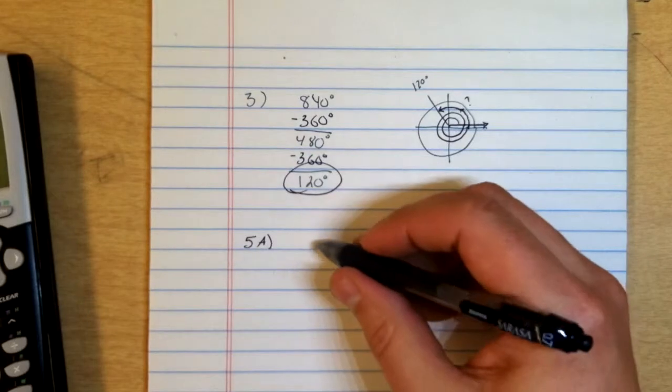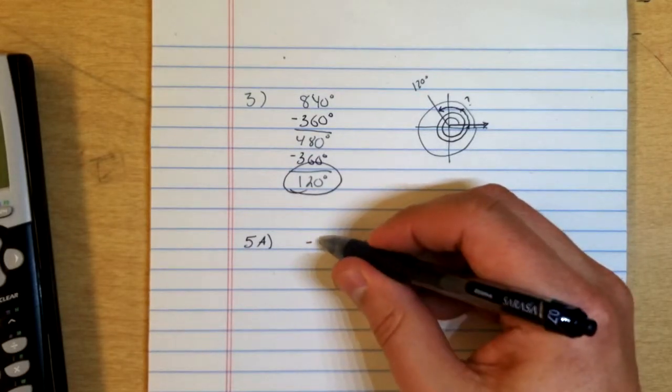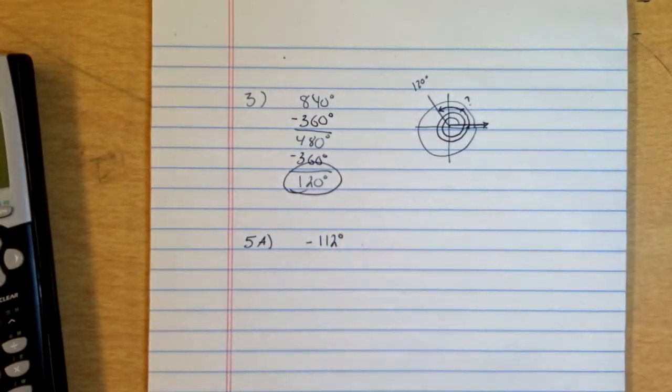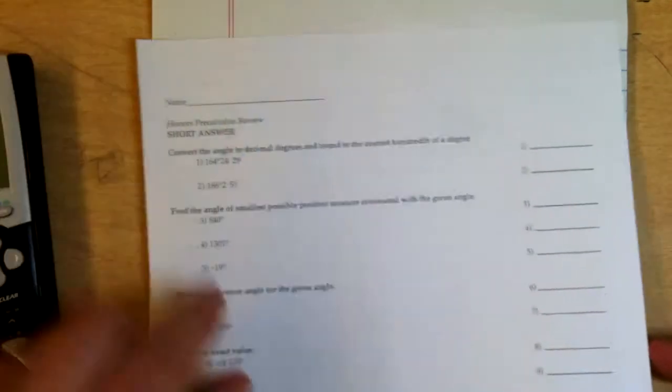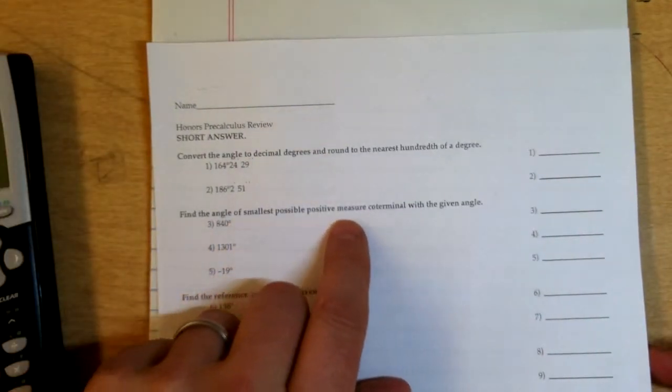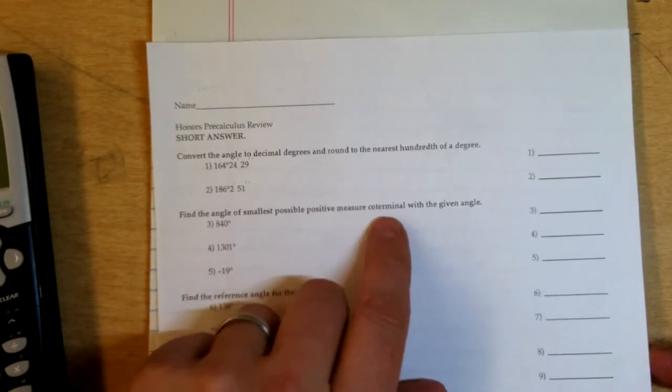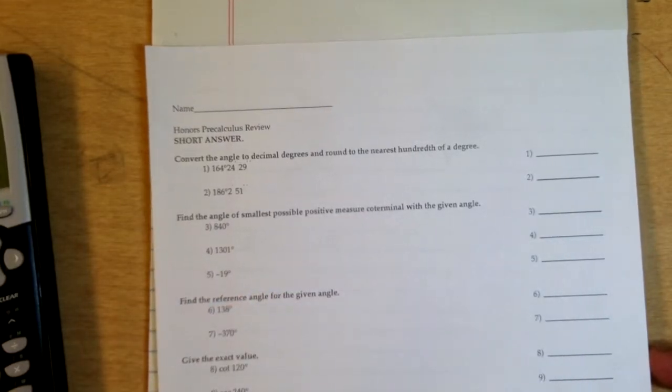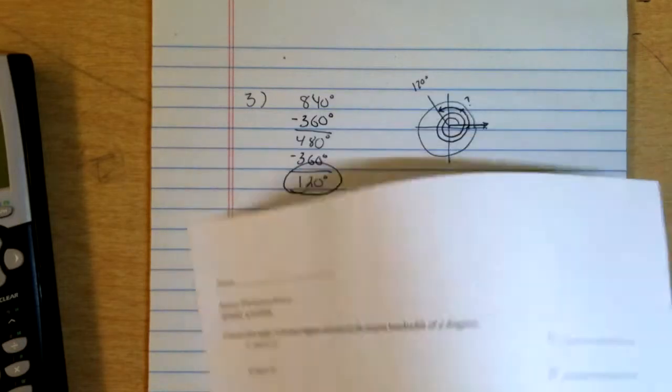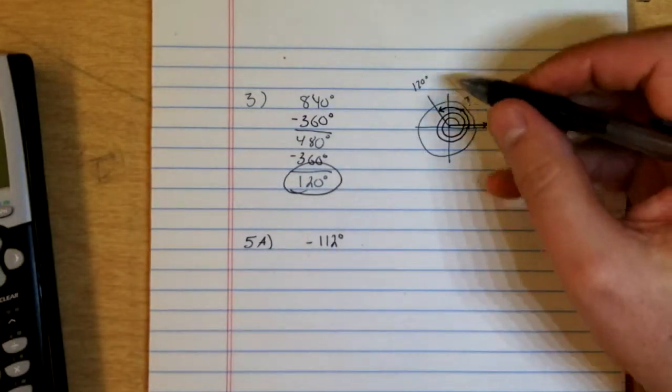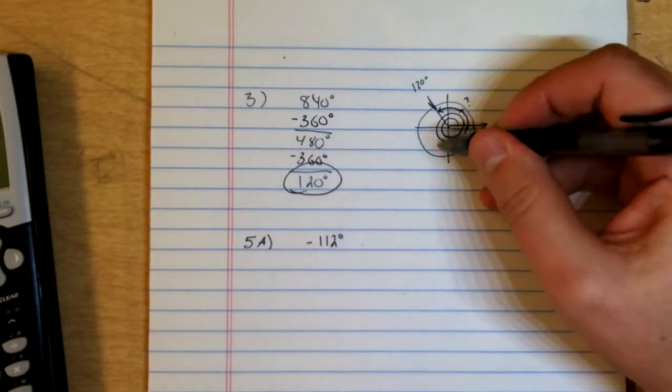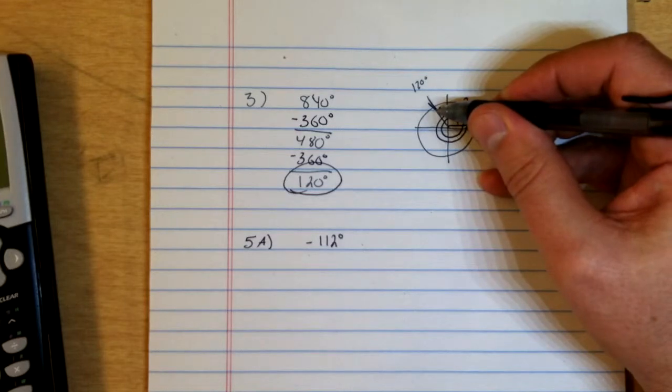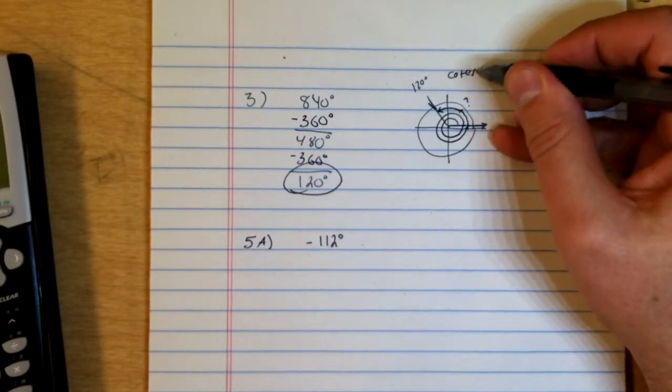So what we do for a negative angle, let's say we had negative 112 degrees, and we still want to follow the same directions, which are that we want the smallest possible positive measure coterminal. So basically we get coterminal angles by adding or subtracting 360 degrees. That's because if I am at a certain angle and I add 360 degrees, I end up in the same place. That's what coterminal means.